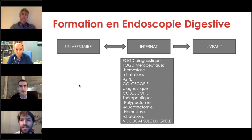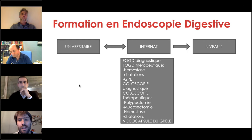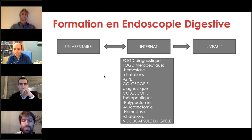La formation en endoscopie digestive, la première partie est universitaire pendant l'internat. Les recommandations de l'ASFED et européennes disent que tout interne en fin de cursus doit être autonome dans l'endoscopie de niveau 1. Le niveau 1 comprend déjà pas mal de choses : l'endoscopie haute diagnostique et thérapeutique avec les hémostases pour hémorragies digestives, les gestes de dilatation, la pose d'une gastrostomie, la coloscopie diagnostique et thérapeutique avec polypectomie, mucosectomie jusqu'à 2 cm, les gestes d'hémostase, la dilatation, et la vidéocapsule.